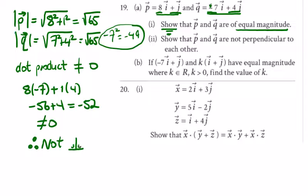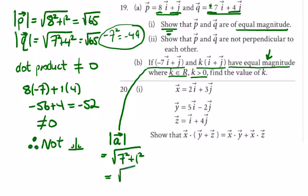Now in part b, if (-7i + j) and k(i + j) have equal magnitude where k is an element of real numbers and k is greater than zero, find the value of k. So this one here, the magnitude we'll call this one a, is equal to the square root of 7 squared plus 1 squared. Write it out until you get brilliant at them: square root 50.